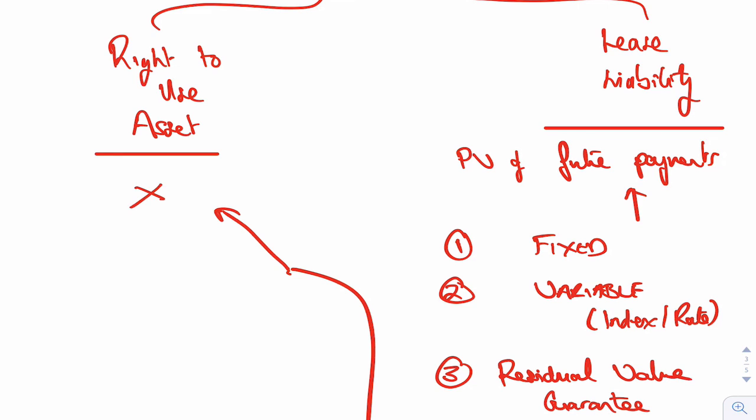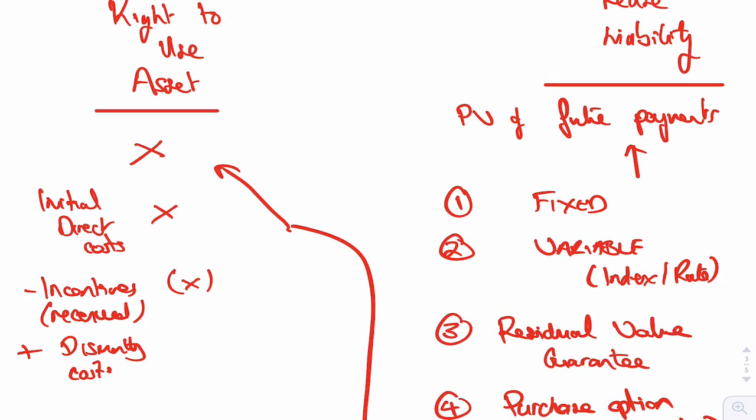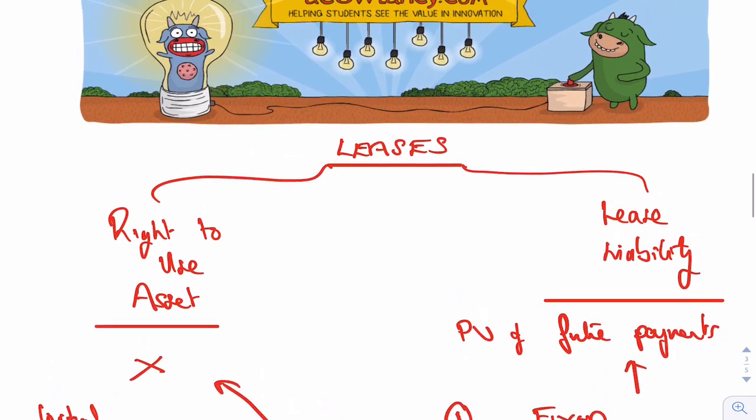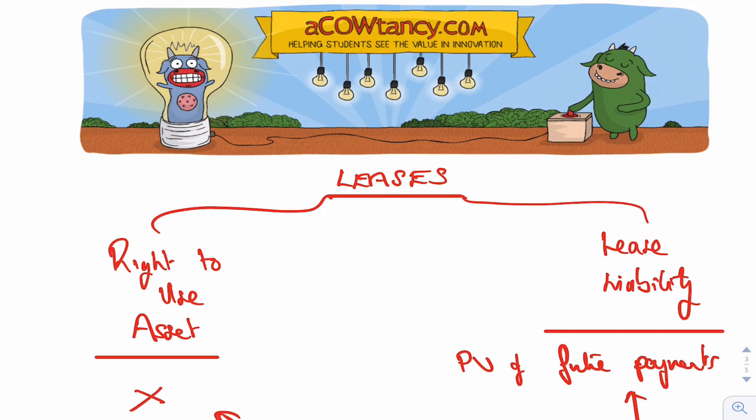Now, added on to the asset as well is any initial direct costs of buying it. So if you've been negotiating the lease or something like that, then add those on. Take off any incentives that you've been given to take the lease. So if there's any incentives received, just take those off, plus any dismantling costs at the end. You'll sometimes hear these called restoration costs as well. So that's the cost of your asset. That's your right to use asset and your lease liability. Now, we're going to go through those all in a lot more detail, but I just want you to get the bigger picture at the moment.